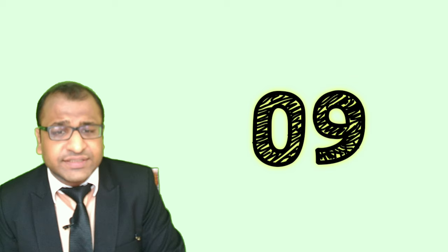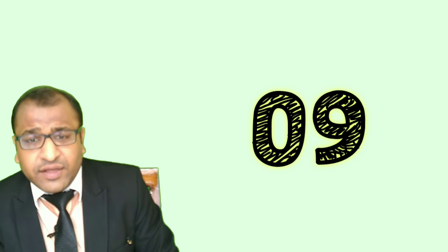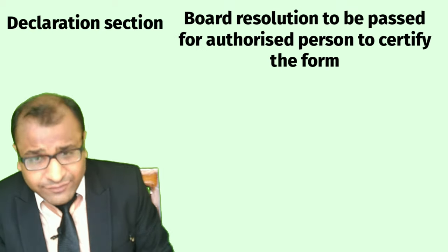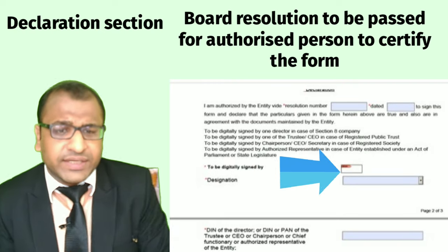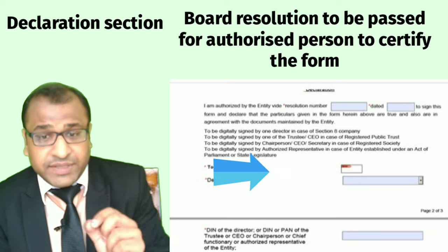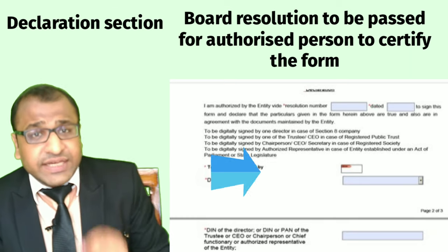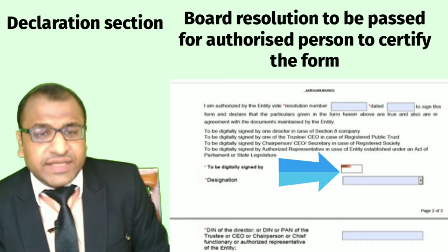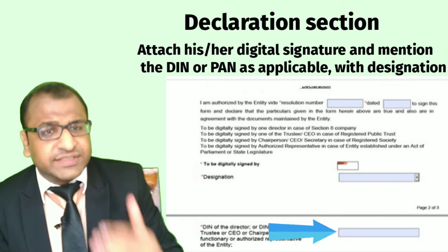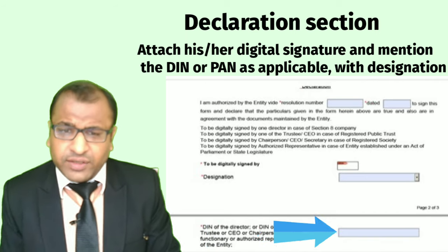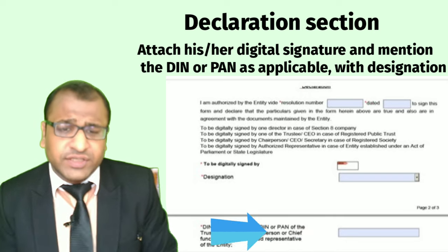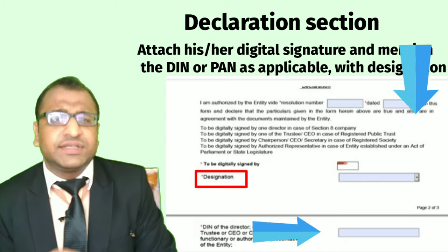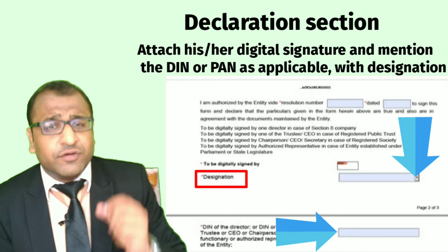Step 9 is the declaration section. With the requirement of providing a resolution number, it is evident that the person whose digital signature is uploaded must be authorized by the board for certifying this form and the details filled therein on behalf of the entity. Once the digital signature is attached, the DIN of such director or PAN of such trustee, CEO, chairperson, chief functionary, or authorized representative of other entities is to be filled in, along with the designation selected from the drop-down list.